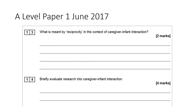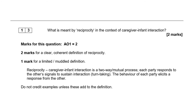Looking at past papers — from A-Level Paper 1, June 2017 — one question asks: 'What is meant by reciprocity in the context of caregiver-infant interaction?' That's where that definition has come up previously, and there's no reason why they won't ask you interactional synchrony at a later date. For the reciprocity definition, two marks are awarded for a clear, coherent definition and one mark for a limited answer. Note: do not credit examples unless they add to the definition, so only include an example if it's relevant.